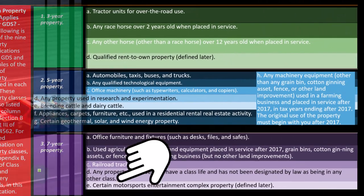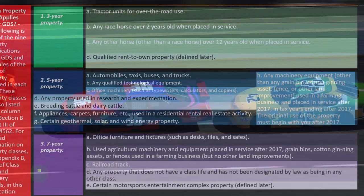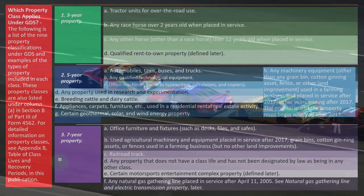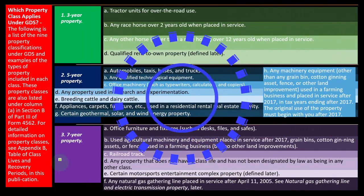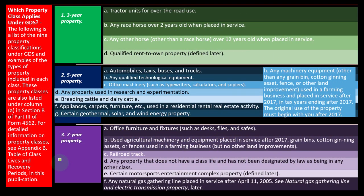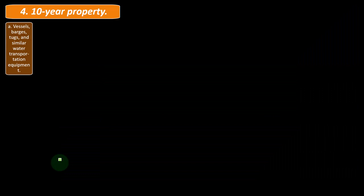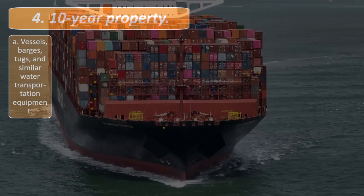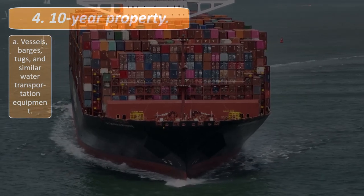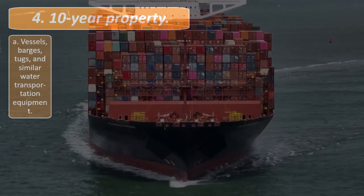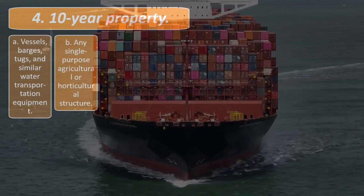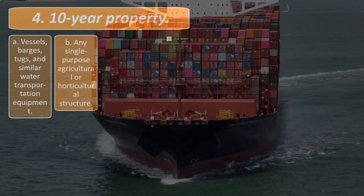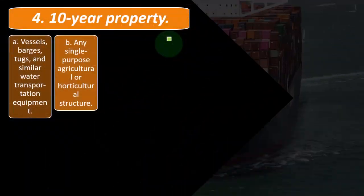Seven-year property also includes certain motorsports entertainment complex property and any natural gas gathering line placed in service after April 11, 2005. Ten-year property includes vessels, barges, tugs, and similar water transportation equipment — more of a specialized area. Notice we're getting into longer depreciation lives here; three, five, and seven years are probably the most common categories.